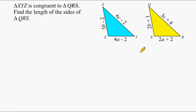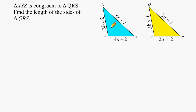It is given that these triangles are congruent to each other, which means they are the same in every way. That means each one of the three side lengths are equivalent to each other. For example, line segment ZY at the bottom would be equal in length to line segment SR, because these two sides correspond to each other. Line segment XZ corresponds to QS, and line segment XY would be equal to QR.